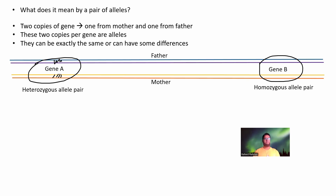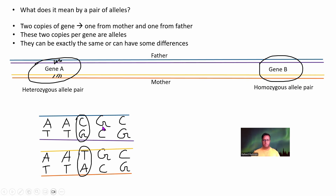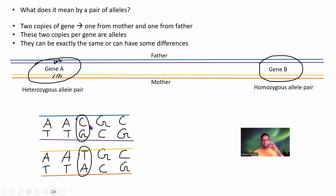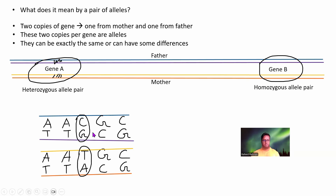Each gene has two copies and these two copies are called a pair of alleles — one from the father and one from the mother. Genes are normally extremely long, thousands of bases, but here I'm showing a small snapshot. The double-stranded DNA of the gene from the father might read AACGC on the forward strand, with a complementary strand, since we know AT and CG are complementary bases. In the mother's copy there is only one base difference from the father's — that is where the heterozygous allele pair idea comes into play.